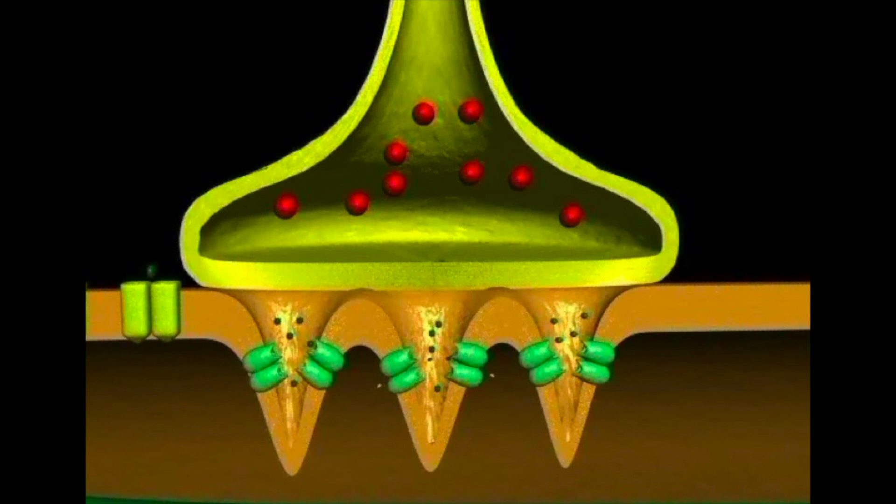Just for a quick review, at the top of the screen is the motor neuron with the secretory vesicles inside of it, and at the bottom you have the motor end plate with the ligand-gated ion channels.